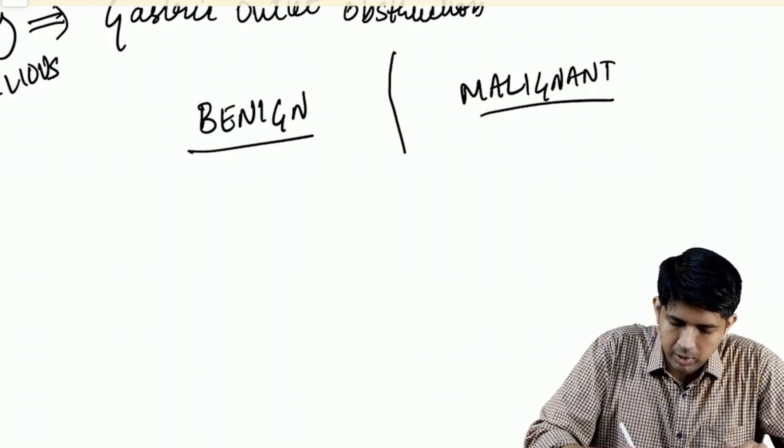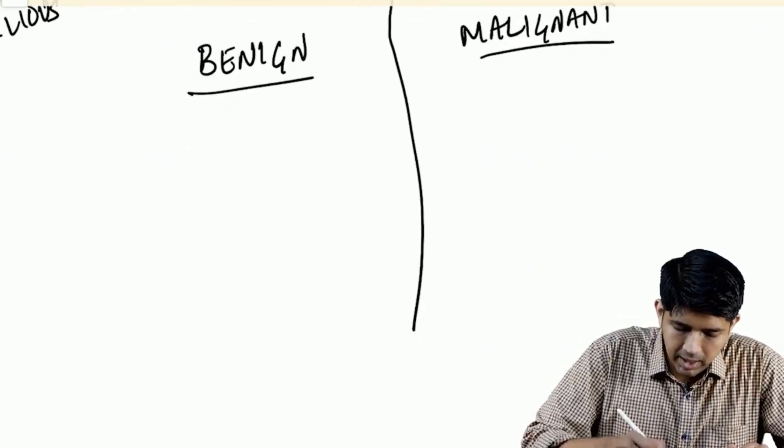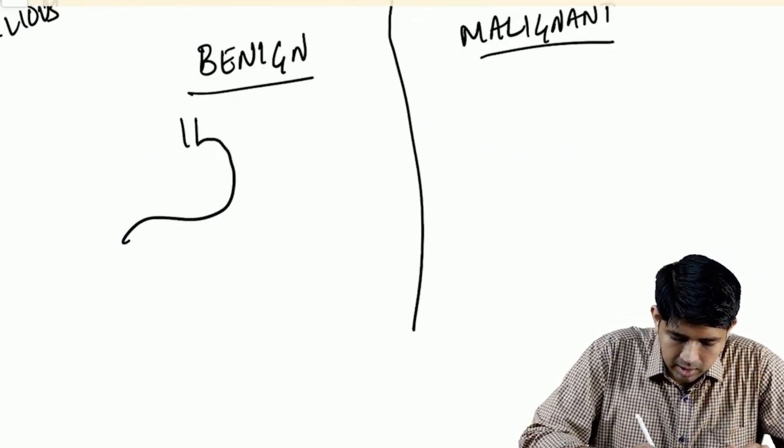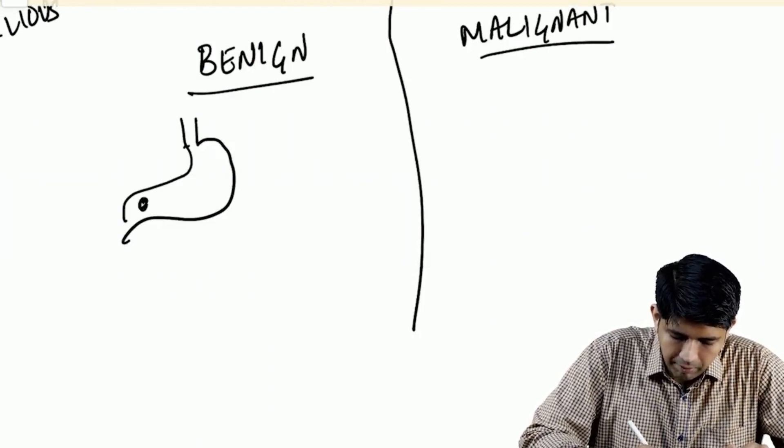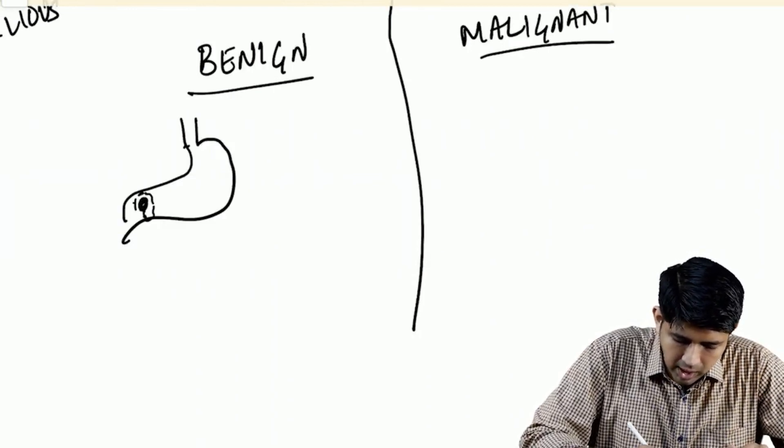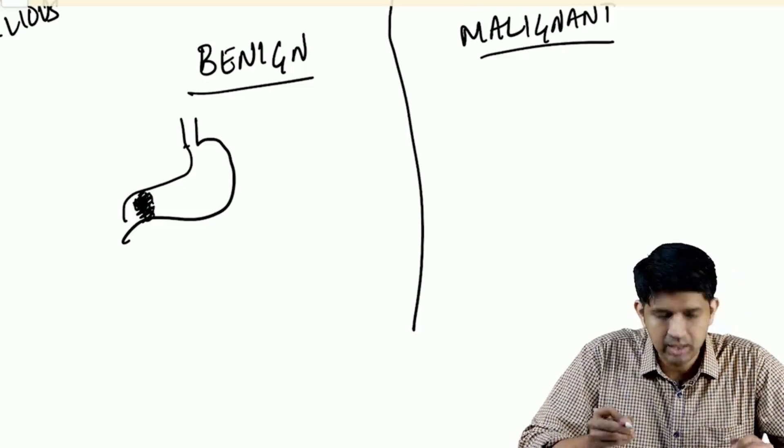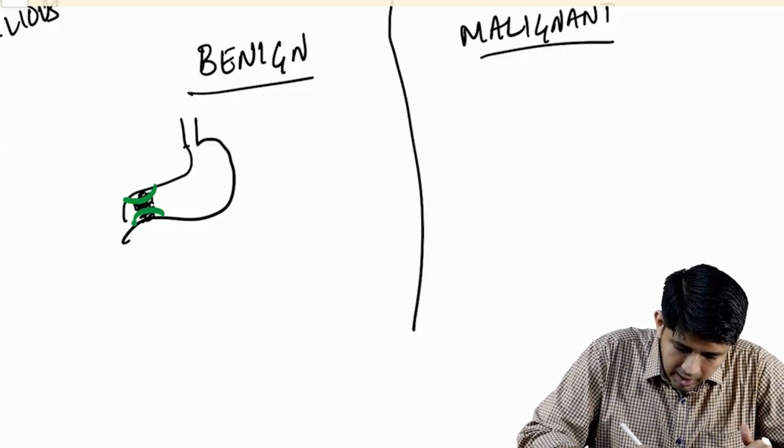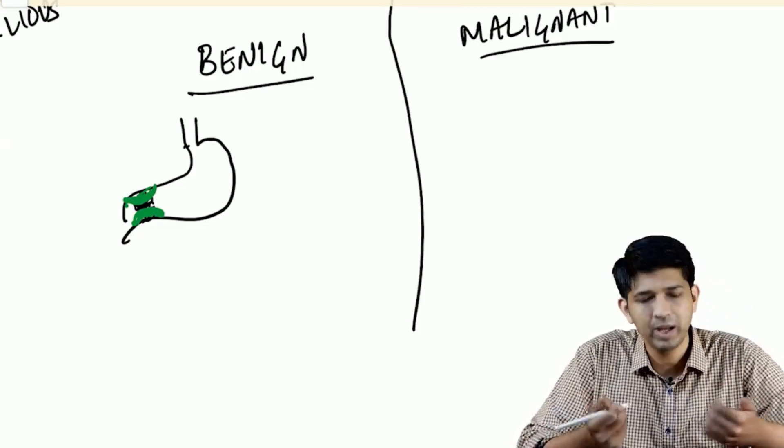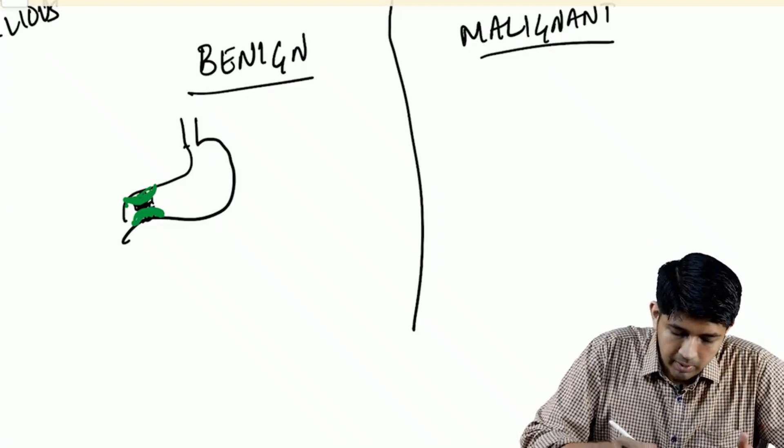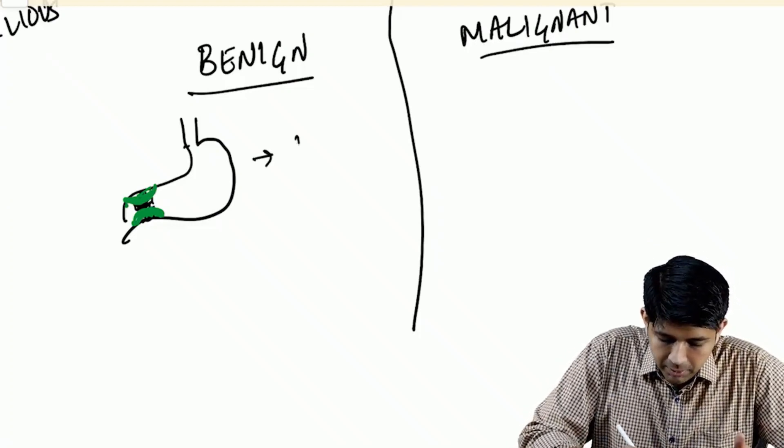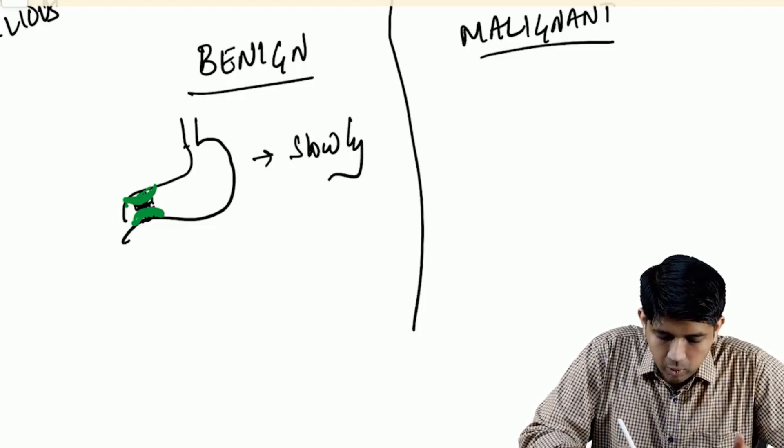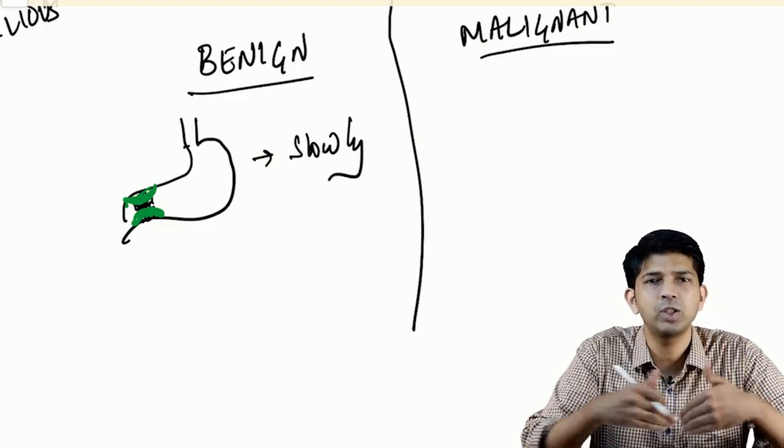Very simple concept. In benign cases, if this is the stomach, you're going to have a peptic ulcer which eventually leads to scarring in this area and there is a block. If not a block, at least initially there will be scarring and narrowing, and only then it becomes a block. This narrowing takes place slowly - it doesn't happen overnight. This narrowing happens gradually over a period of weeks to months.